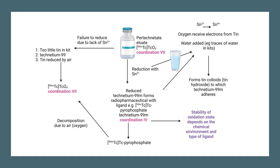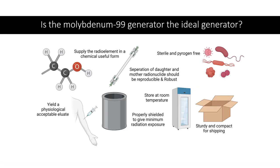Regarding technetium labeling, the pertechnetate eluate is technetium in the plus-seven coordination state, which is chemically not directly useful. However, the chemistry of technetium is very flexible because you can perform reduction with tin and access all seven coordination states, then label with a variety of different radiopharmaceutical vectors. It is very easy chemistry, but the quality of the eluate is important — you should not add air or water, as there is a lot that can go wrong.